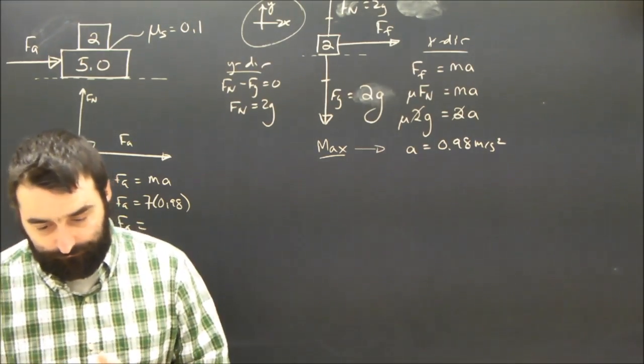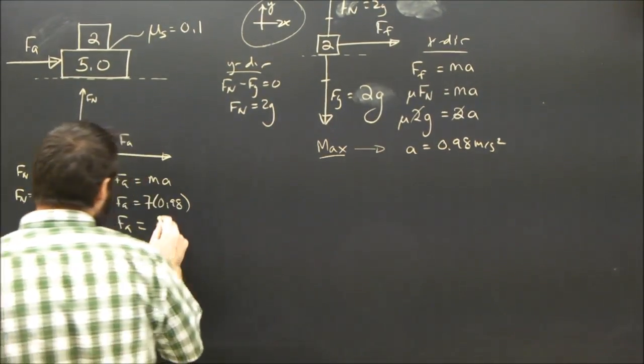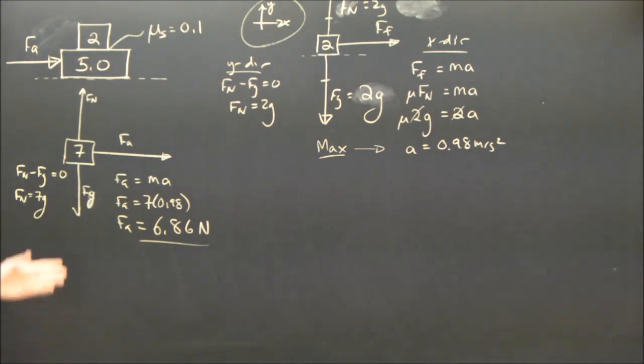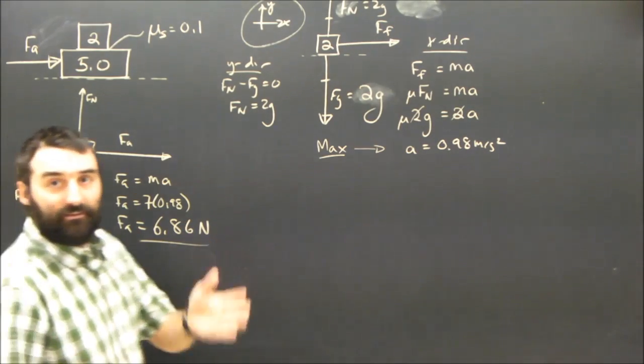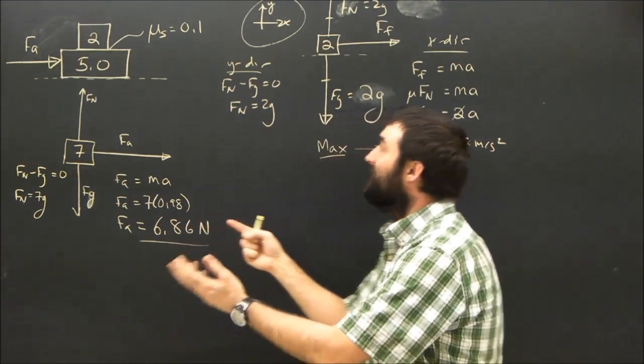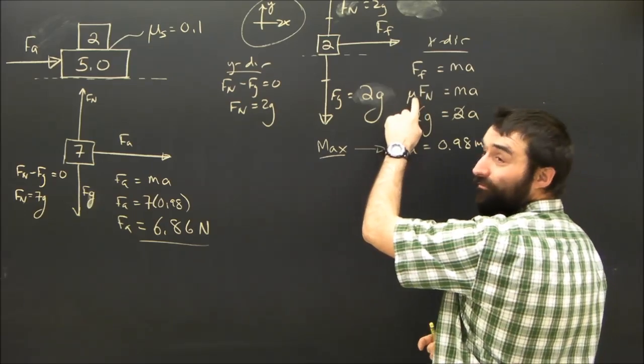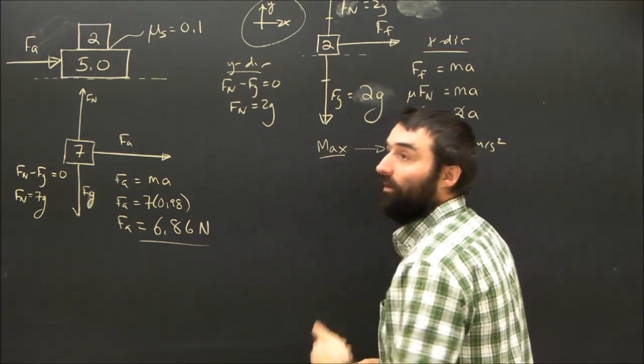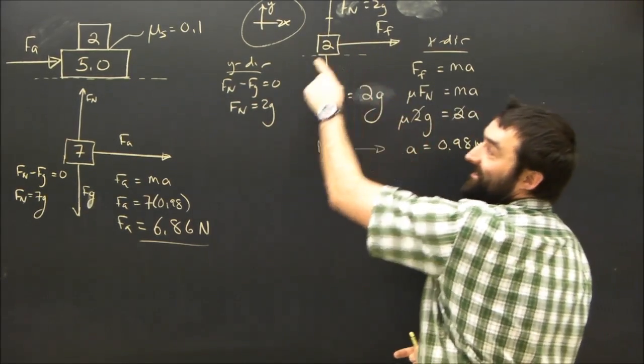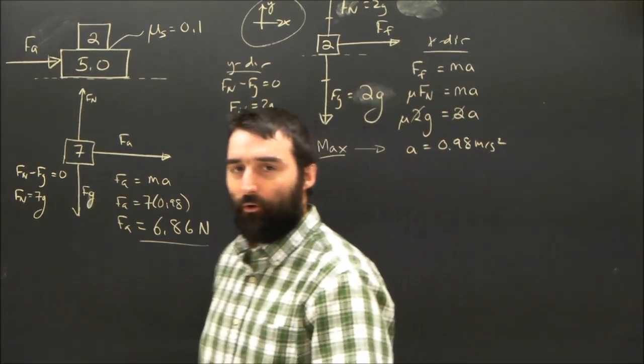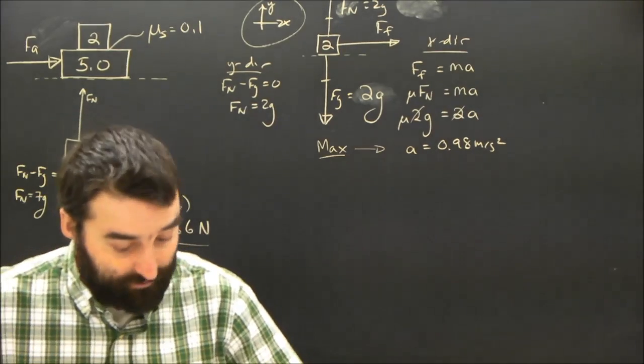So, my applied force is going to be seven times 0.98, and that's the maximum applied force. Well, what is that first of all? 6.86 newtons. So, if I apply anything between zero and 6.86, the acceleration will be less than 0.98, which means that mu Fn, the friction, can equal what it needs to be to make that thing accelerate the same rate as the whole group. Easy? Not quite straightforward, but hopefully comprehensible.